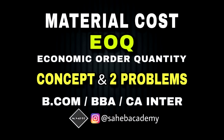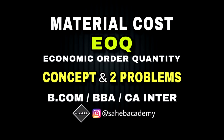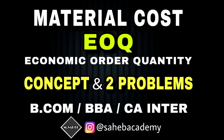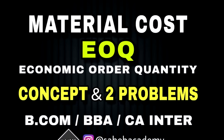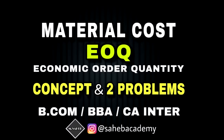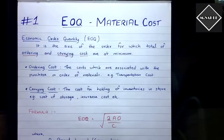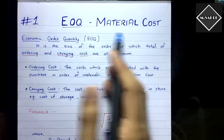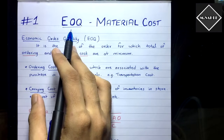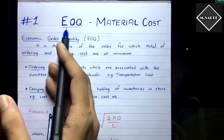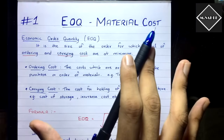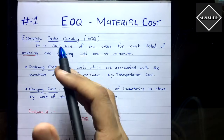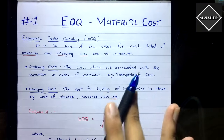Hello everyone, you're watching Sahab Academy. If you like our videos, please subscribe to our channel and hit the bell icon for regular updates. Also follow us on Instagram, Sahab Academy. In this video we are going to start the new topic of material costing — that is EOQ, Economic Order Quantity. It's a very simple and easy topic. First let's start with the concept of EOQ and then we'll solve some problems.